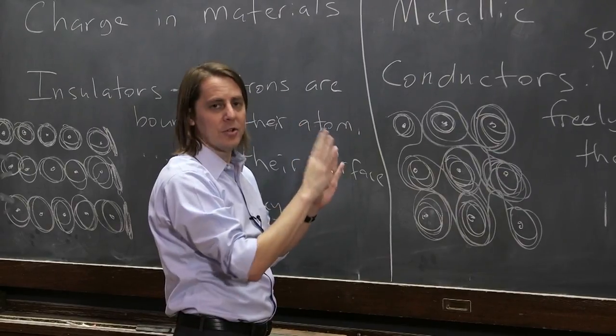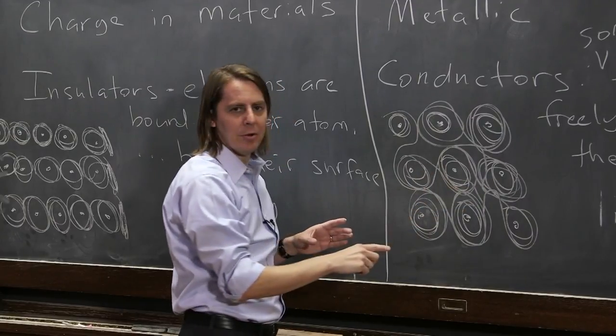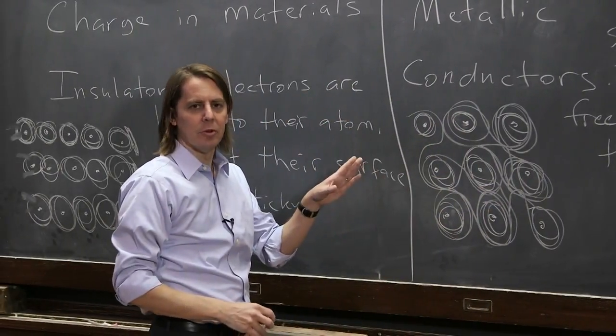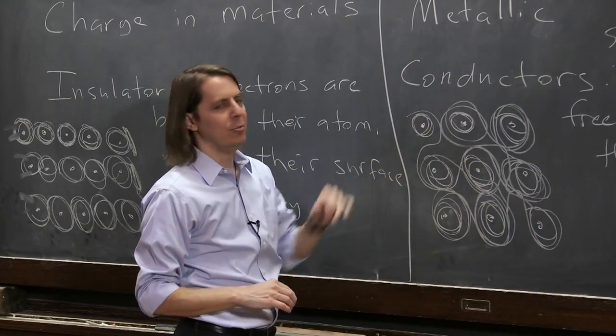The metallic conductor is not charged. It's still neutral. It's just some of the electrons that make it neutral are free to move around. So we still have the same number of protons and electrons. There's not any extra electrons. It's just the way the chemical bonding works out. Some of them are free to move around.